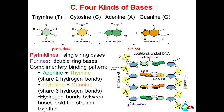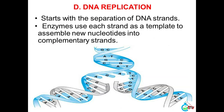C. Four kinds of bases: Thymine (T), Cytosine (C), Adenine (A), Guanine (G). Pyrimidines are single-ring bases; purines are double-ring bases. Complementary binding pattern: Adenine and thymine share two hydrogen bonds; Cytosine and guanine share three hydrogen bonds.